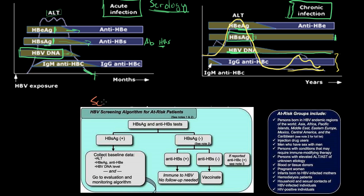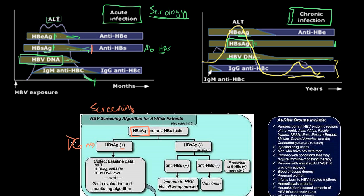Screening for hepatitis B is pretty straightforward. You begin by looking at your hepatitis B surface antigen. If your surface antigen is positive, then you've got hepatitis B. If it's positive for less than six months, you probably have acute hepatitis B, and if it clears after six months, you've cleared it. However, if your hepatitis B surface antigen is present for more than six months, that means you probably have chronic hepatitis B. Notice your surface antigen never goes away in chronic infection.